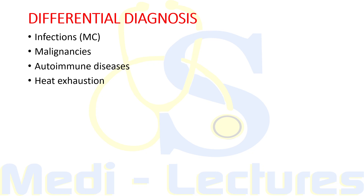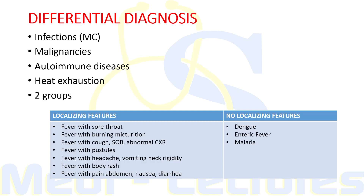Among patients with localizing features: fever with sore throat suggests upper respiratory tract infection, be it bacterial or viral; fever with burning micturition most probably indicates urinary tract infection; fever with cough, shortness of breath, and a patch or consolidation on X-ray suggests pneumonia.